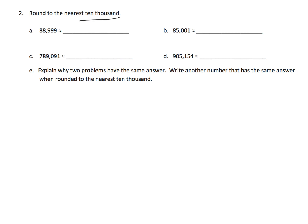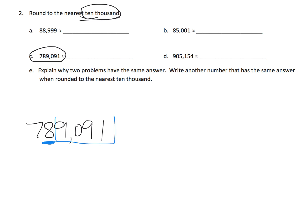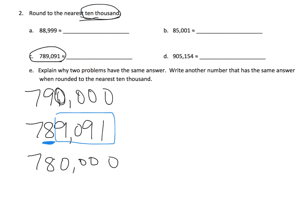Rounding to the nearest 10,000, I'm going to describe this more like using the regular algorithm. Let's take a look at 789,091. Since we're rounding to the nearest 10,000, we identify the ten-thousands place right here. We look at the remaining digits and ask: does this part mean we're going to be closer to 780,000 or closer to 790,000? Students will recognize this piece makes us closer to 790,000.